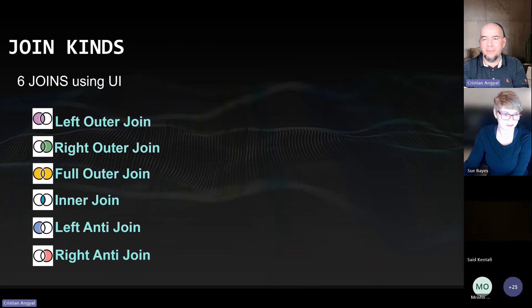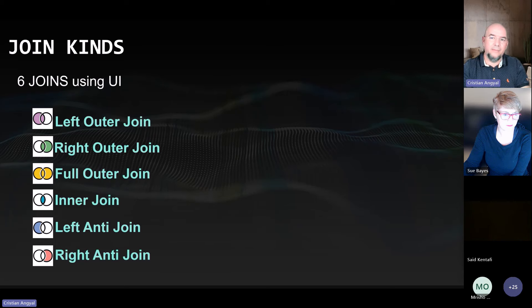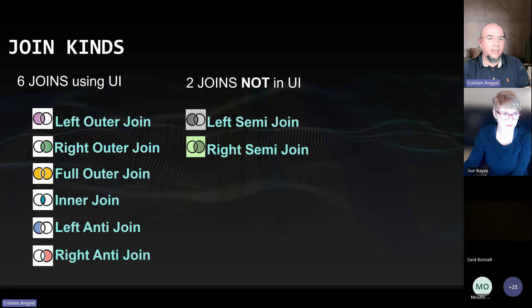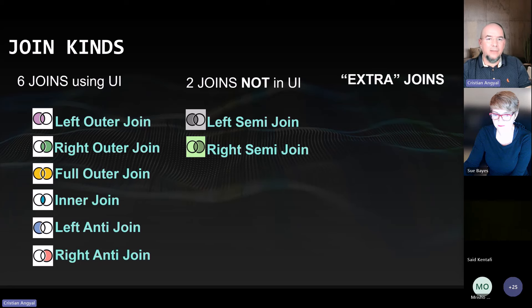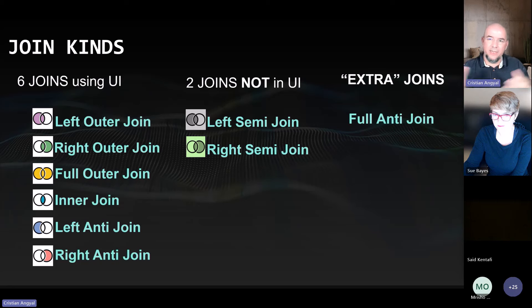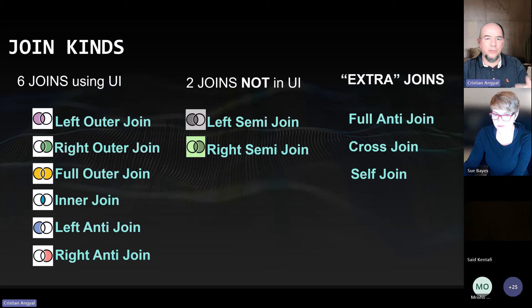Quickly, the join types. There are six join types using the user interface: left outer join, right outer join, full outer join, inner join, left anti-join, and right anti-join. There are also two joins not available using the UI: left semi-join and right semi-join. And we can have some extra joins, like the full anti-join — which shows all differences between left and right tables — cross joins, and some self-joins.